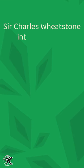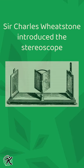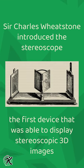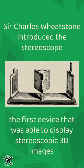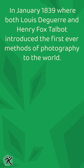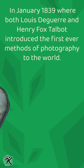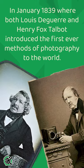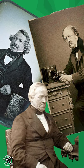Sir Charles Wheatstone introduced the stereoscope, the first device that was able to display stereoscopic 3D images, although with illustrations rather than photographs, as it would be half a year later in January 1839 where both Louis Daguerre and Henry Fox Talbot introduced the first ever methods of photography to the world.